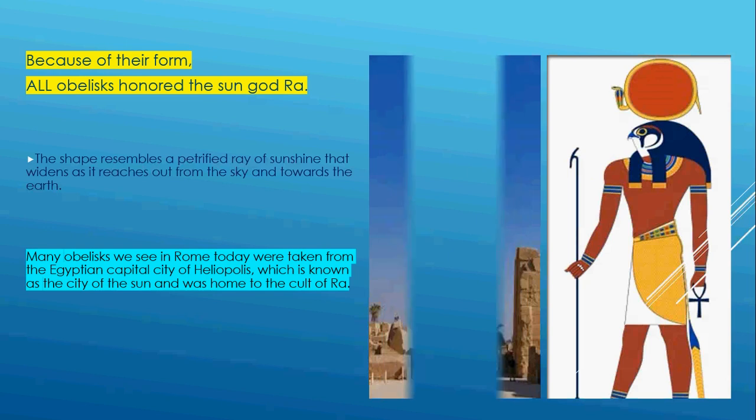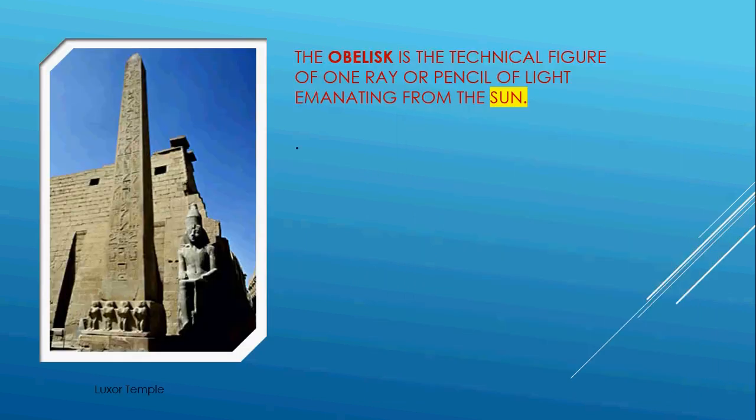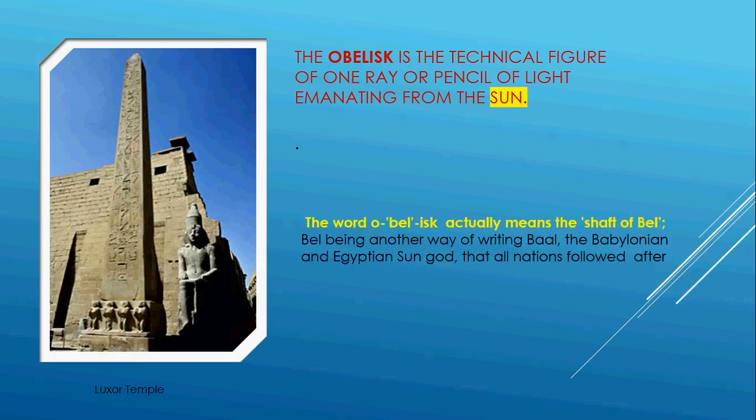Many of the obelisks we see in Rome today were taken from Egypt. The capital city of Heliopolis was the city of the Sun and was known to be home to the cult of Ra. The obelisk is the technical figure of one ray, or a pencil of light emanating from the sun.